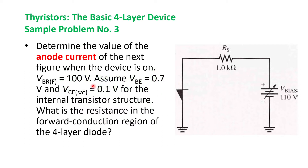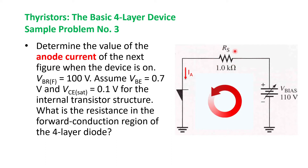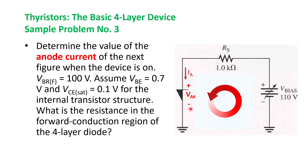There are two items to determine: the anode current and the resistance in the forward conduction region. The anode current is the current passing through the anode part of the diode — this upper area is the anode and the lower part is the cathode. The anode current is the same current passing through the whole series circuit. To determine the anode current, we use KVL across this loop: voltage bias equals voltage across the resistor plus voltage across the diode.